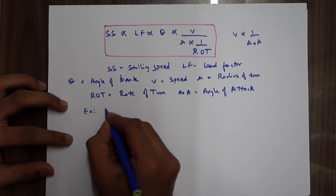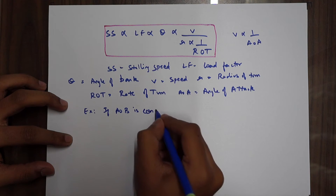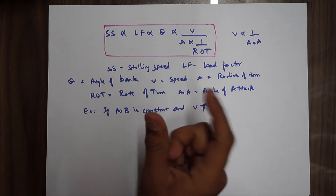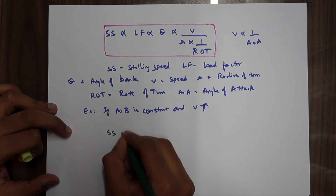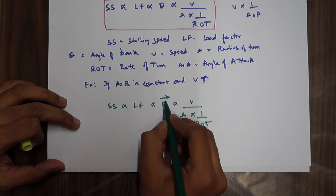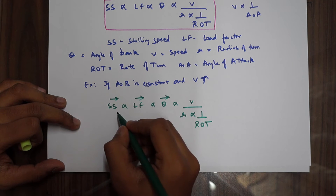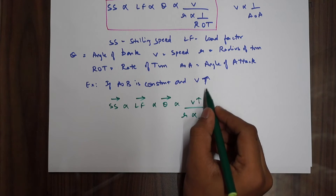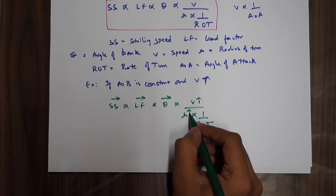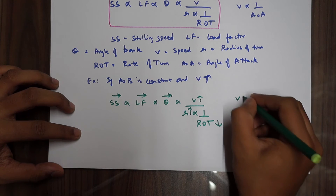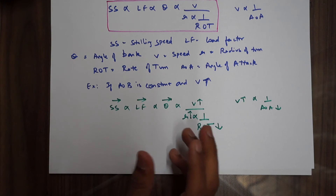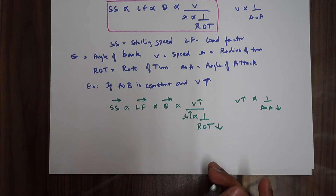How do we use it? Example: if angle of bank is constant and your speed is increasing, all we do is write the formula again. If angle of bank is constant, all parameters to its left are also constant. Speed is increasing, so to keep bank angle constant the radius of turn also has to increase, and inversely proportional, the rate of turn has to decrease. As V increases, your angle of attack decreases. At 90 degrees angle of bank, the horizontal component is maximum and vertical component of lift is zero.